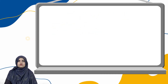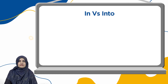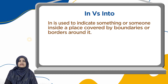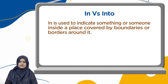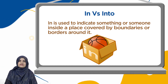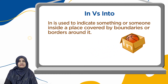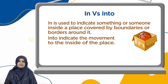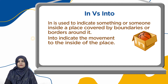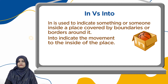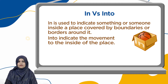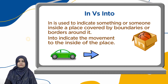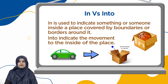First of all, in versus into. "In" is used to indicate something or someone inside a place covered by boundaries or borders around it — for example, the ball is in the box. "Into" is used to indicate the movement to the inside of a place. Basically, into is the combination of two different prepositions, in and to. For example, the car is moving towards its certain position — the ball is going into the box.